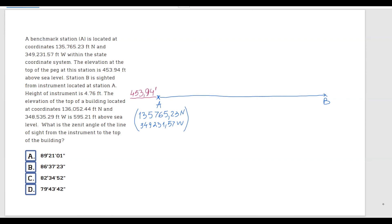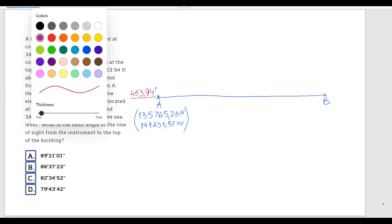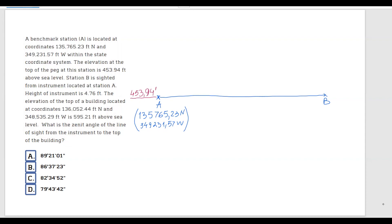Station B is cited from the instrument located at station A. The height of the instrument is 4.76 feet. Let's go ahead and represent that as well — I'll draw the instrument. And this height is 4.76 feet, not 453.90 — that was totally wrong. The instrument height is 4.76 feet.